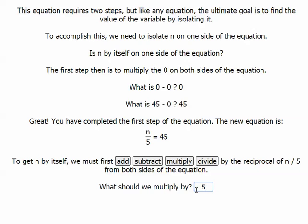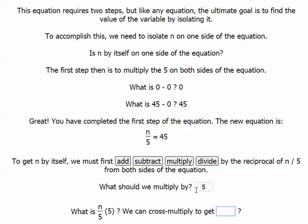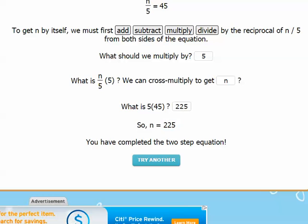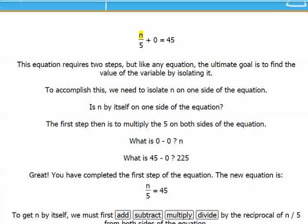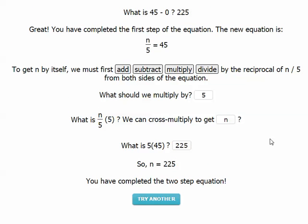So I type 5 in, and it says what is n over 5 times 5? We can cross multiply, and we get n. And what is 5 times 45? So 45 times 5, I believe, is 225. So n equals 225. So that's one example of a two-step equation. You see the students will work with the program on a step-by-step basis to guess the answer.